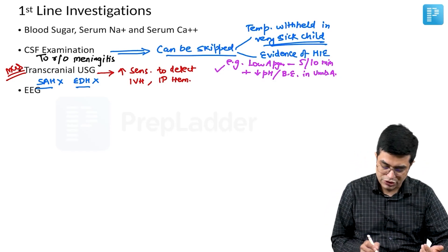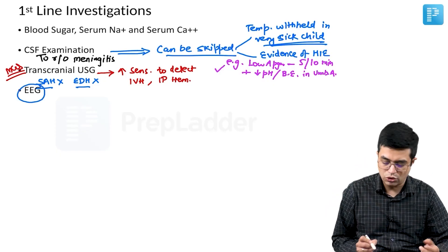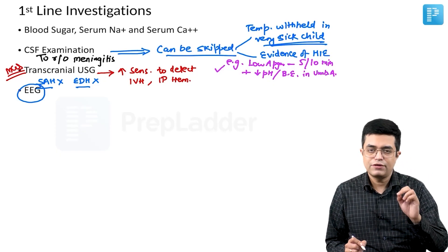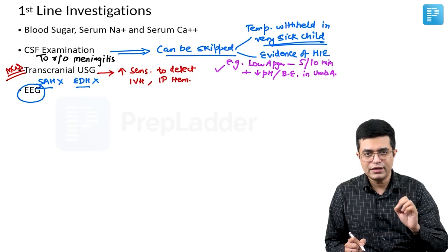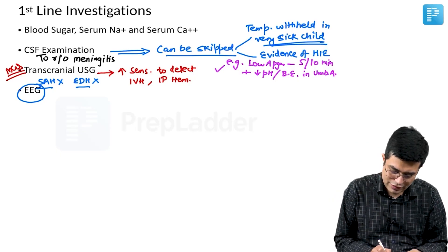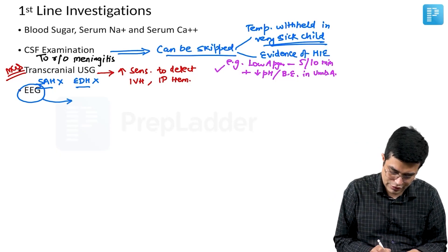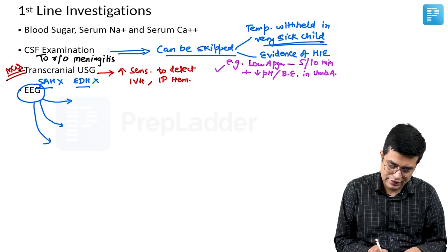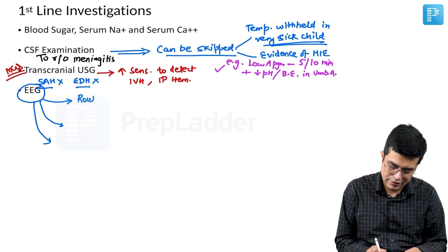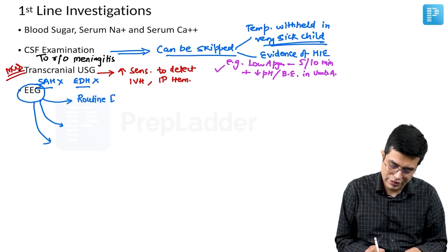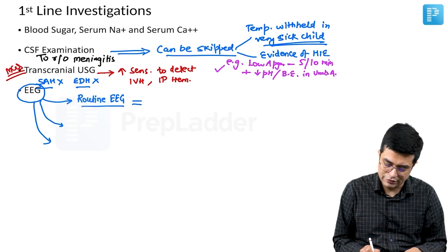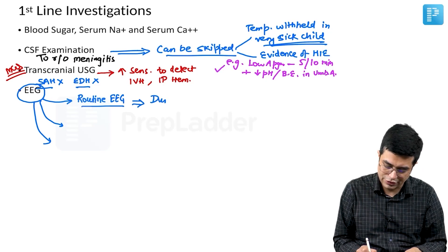Then you will do an EEG in the patient. EEG is very important. Let us discuss a few points related to EEG. EEG is a first line investigation in any neonatal seizure. Now, broadly speaking, there are three types of EEG that you need to know. The first type of EEG is the routine EEG. The routine EEG is sensitive, but routine EEG we say when the duration of the EEG recording is about 1 hour.